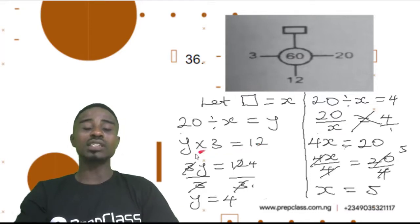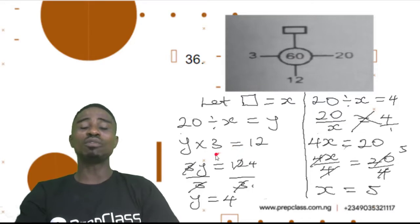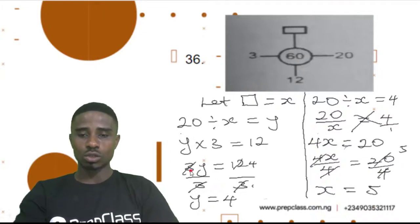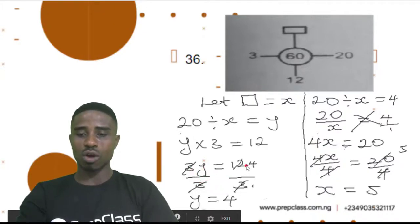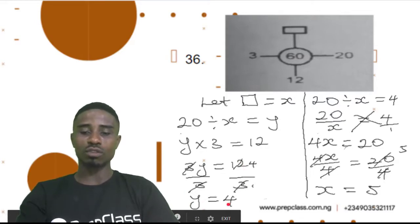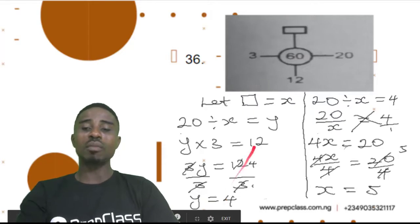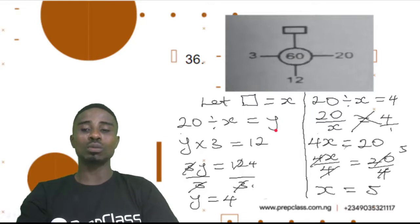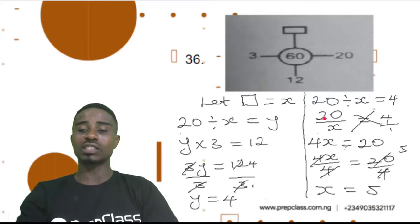So, y times 3 is 3y. 3y equals 12. How do we solve such an equation? We are going to divide both sides by 3 so we can have the value of y. So, 3y over 3 equals 12 over 3. That gives us y equals 4. Now, remember we said 20 divided by x will give us y, which we now know to be 4. So, we now write it as 20 over x equals 4.